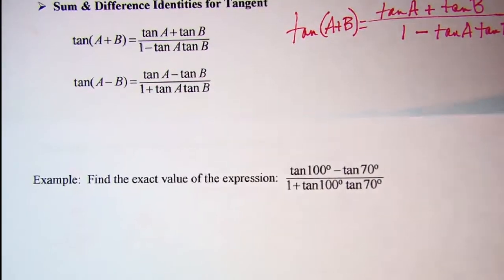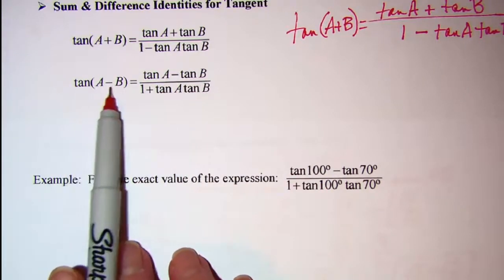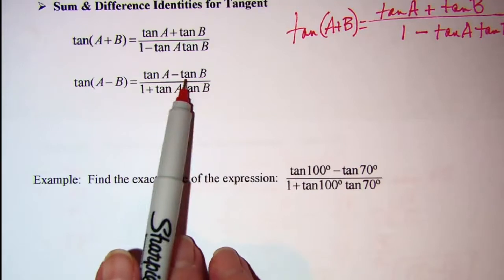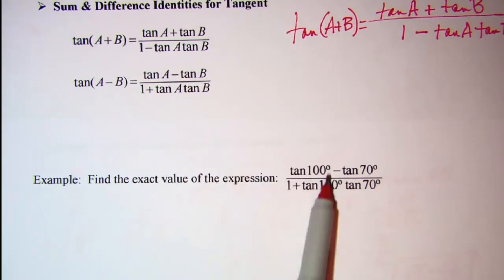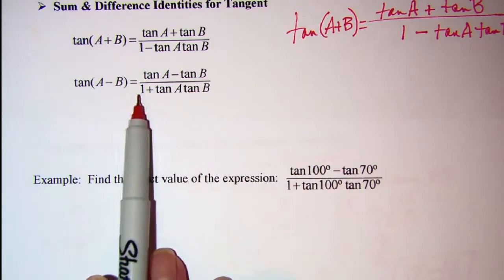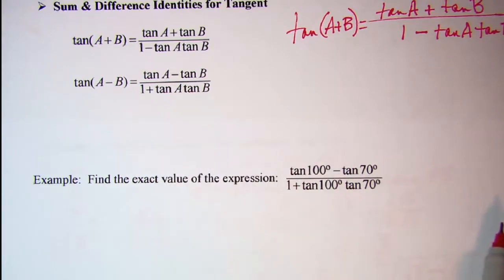So this looks like our tangent identity. Our tangent identity, we want a minus in the numerator, so it looks like we're doing the tangent of a difference because we have a minus in between our two terms in the numerator and we have a plus between the one and the product here of the tangent A tangent B.